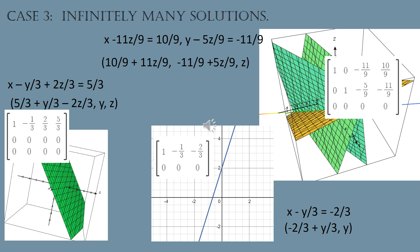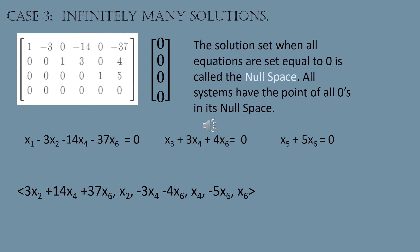You could also have three equations that reduce down to a single plane. With two rows of zeros and the first row reading x minus (1/3)y plus (2/3)z equals 5/3, we solve for x: x = 5/3 + (1/3)y - (2/3)z. Both y and z are independent variables. The solution set is (5/3 + (1/3)y - (2/3)z, y, z) — pick any y and z, and x is defined accordingly. All those points form a specific plane, and every point on that plane is a solution. These ideas extend to higher dimensions.